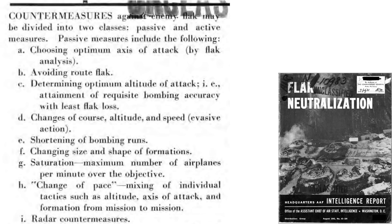This page from a declassified August 1945 headquarters AAF intelligence report titled Flak Neutralization outlines steps formations can take to reduce a flak threat. Item C lists bombers flying at an optimum altitude of attack.